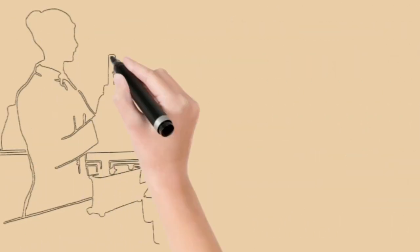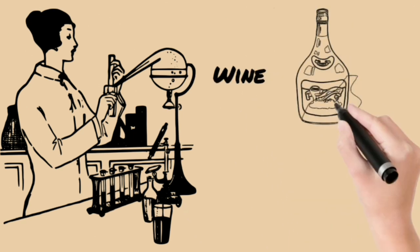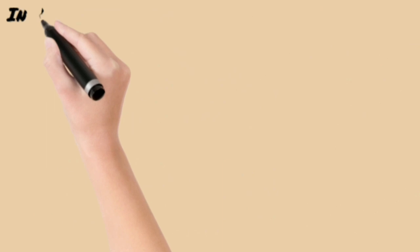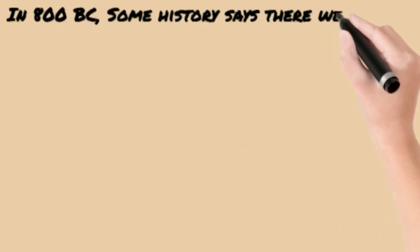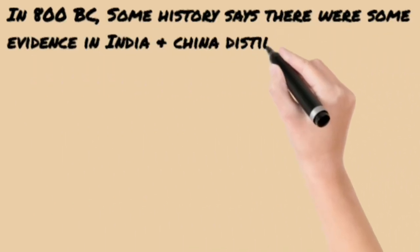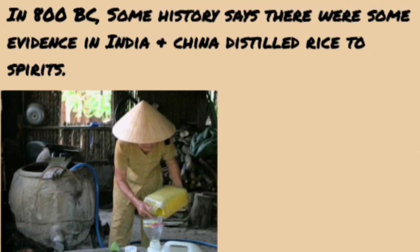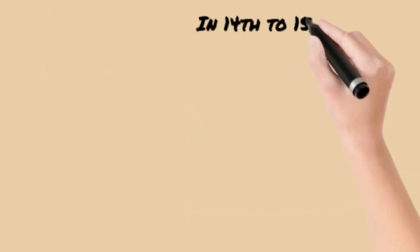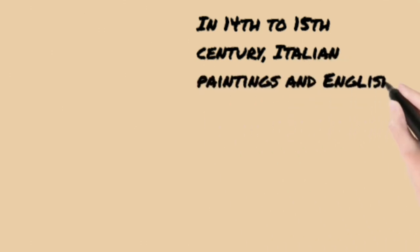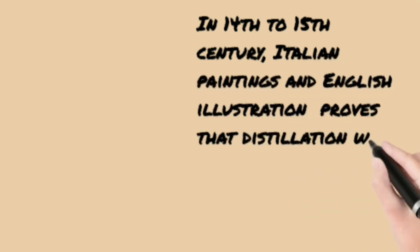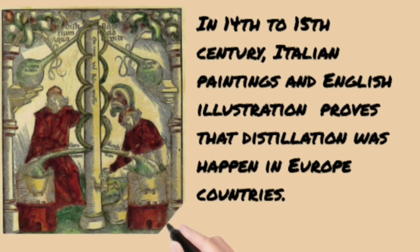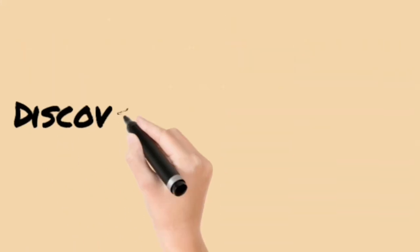Which drink was distilled first — wine or beer? Undoubtedly, the earliest distillates were of wine, since it had a more salubrious and exalted image than beer. In 800 BC, some history suggests evidence in India and China of distilled rice spirits, however this is not proved. Italian paintings and English illustrations from the 14th to 15th century confirm that distillation was happening in European countries.